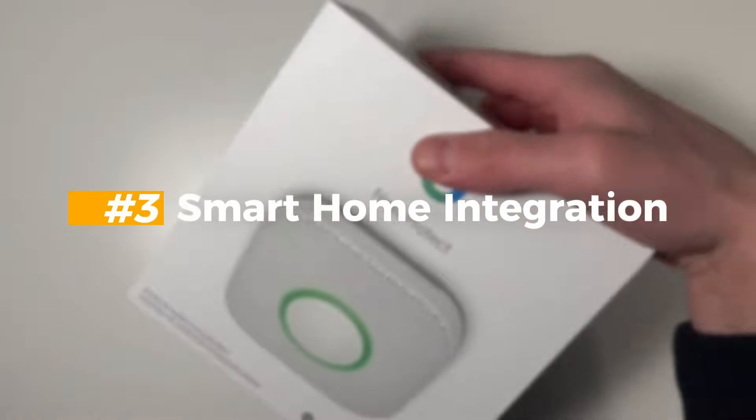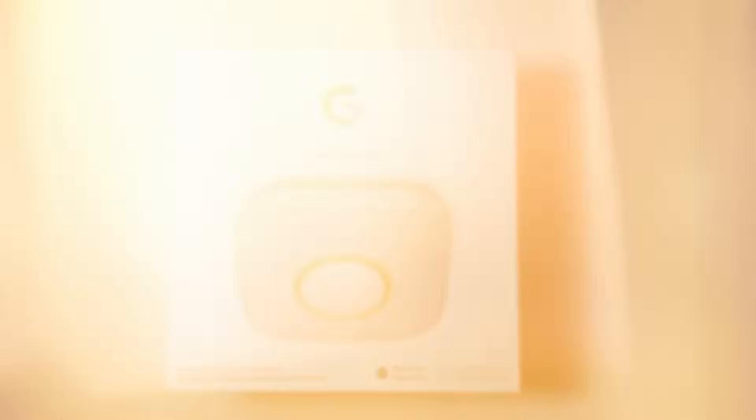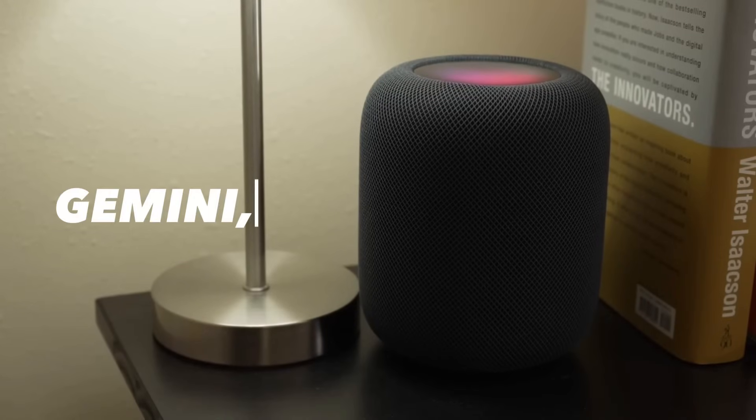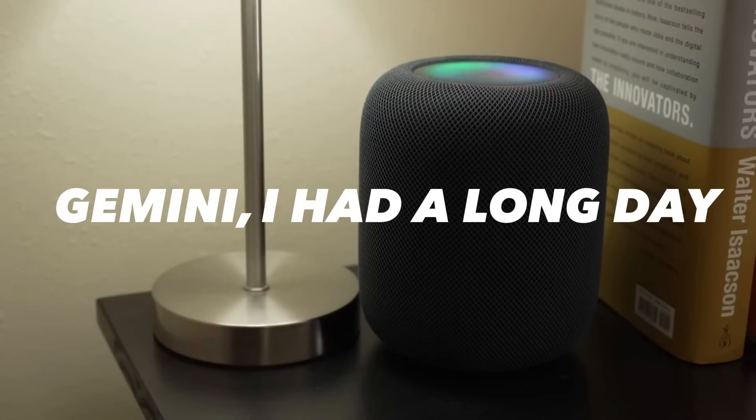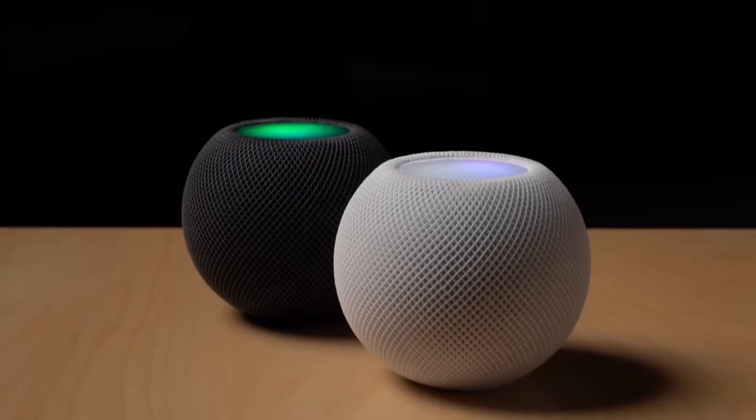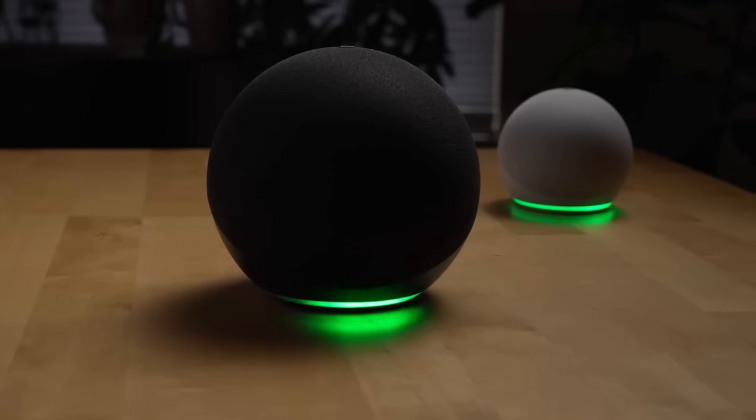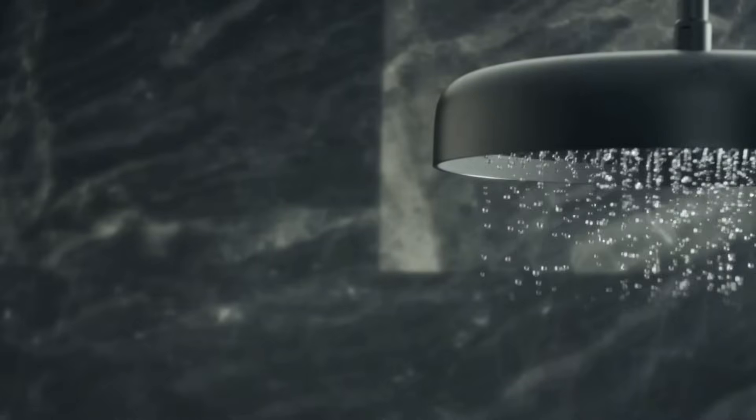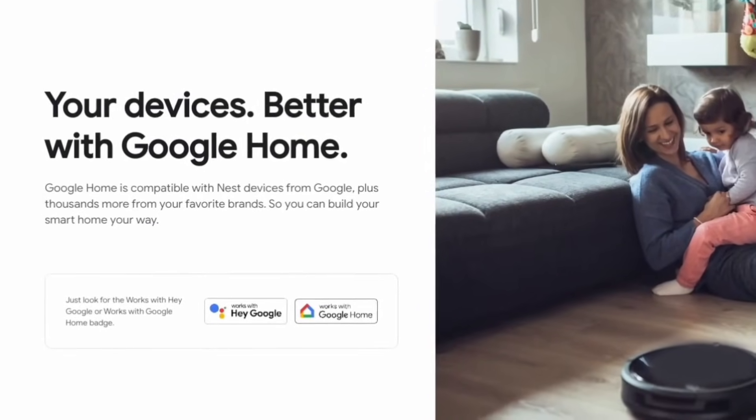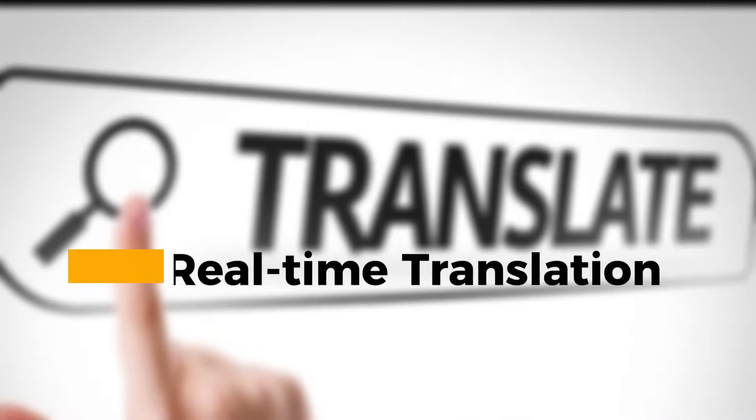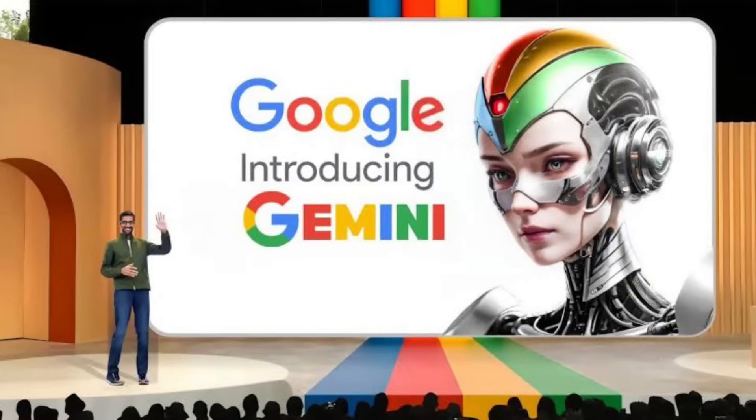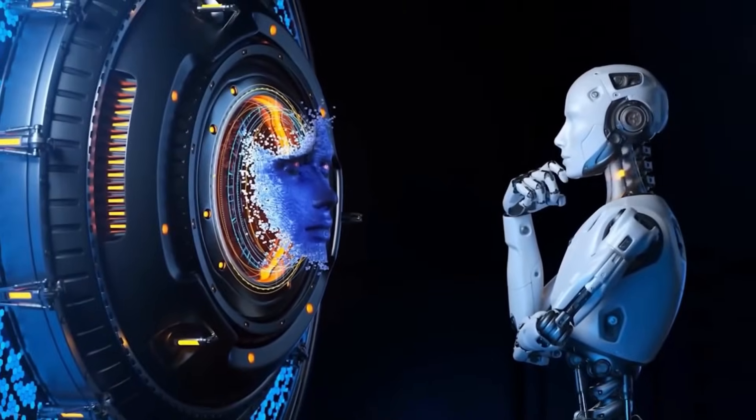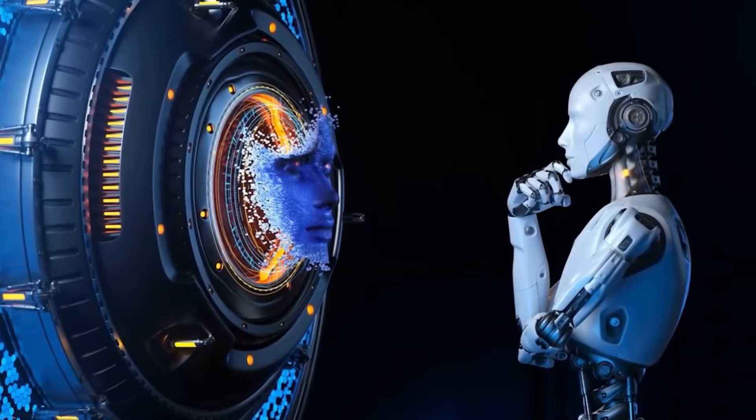Number three, smart home integration. Picture this. You walk into your home and say, Gemini, I had a long day. The AI understands not just your words, but your tone, and perhaps even your facial expression. It dims the lights, plays your favorite relaxing music, and even starts preparing a warm bath for you. It's not just a smart home. It's an empathetic home. Real-time translation. Gemini can translate spoken language into sign language in real-time. Imagine the inclusivity and accessibility that this could bring to the world.